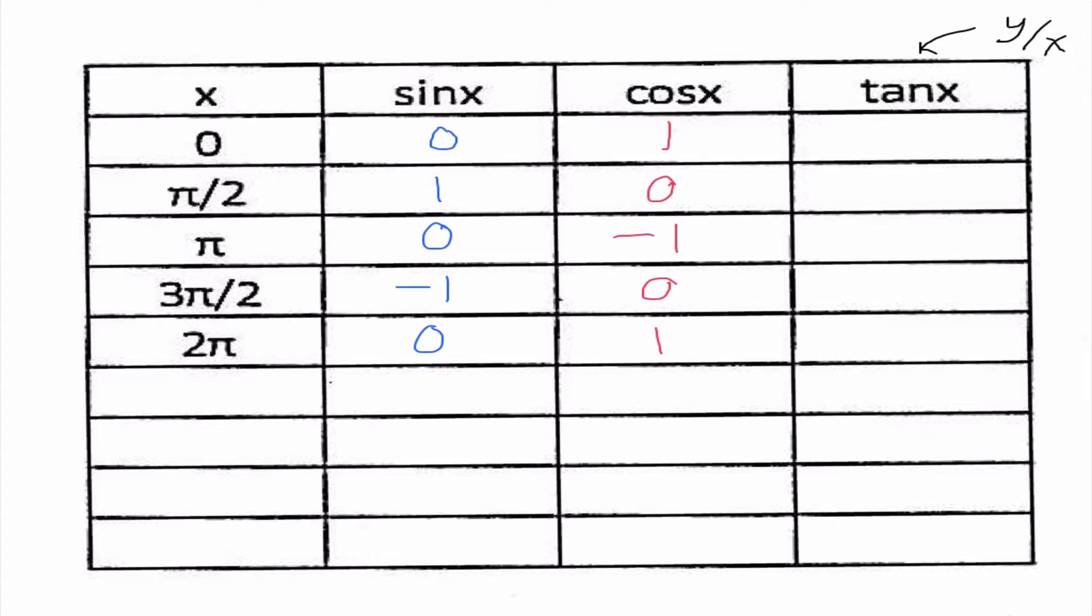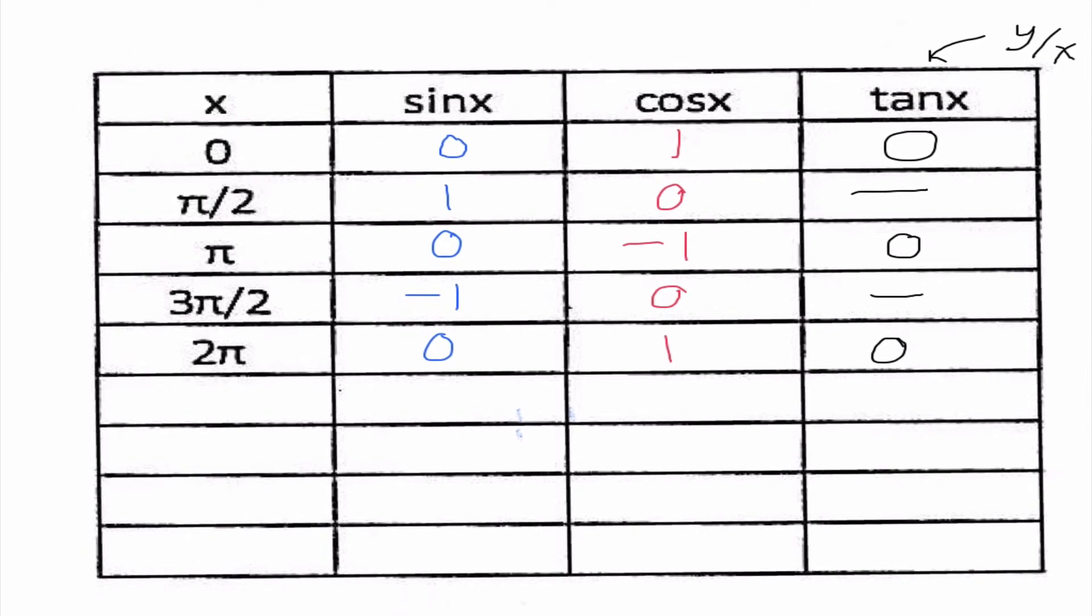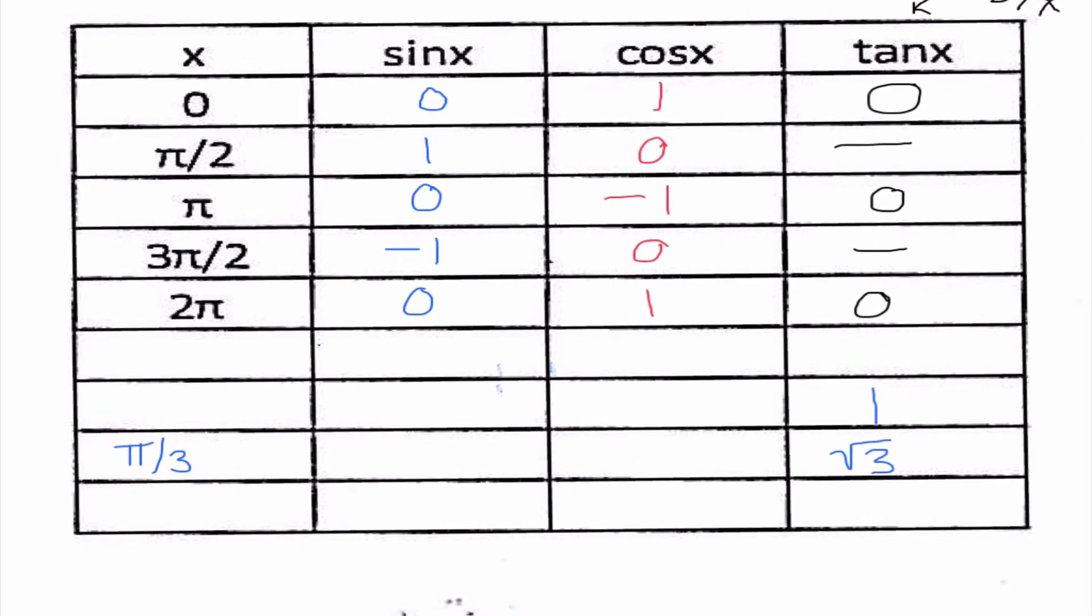So some kind of weird things happen here. For 0, 0 divided by 1, we get 0. For π over 2, 1 divided by 0 is undefined, so I'm going to put a little dash there. And then I get 0, and then I get undefined, and then I get 0 again. And quite honestly, I don't know how the heck to graph this. So we're going to rely on some other angles that we've previously learned. I know π over 6, our tangent there, is radical 3 over 3. I know π over 4 has a tangent value of 1. And π over 3 has a tangent value of radical 3.